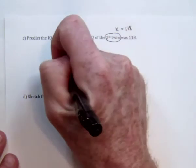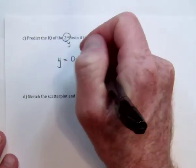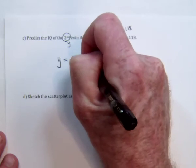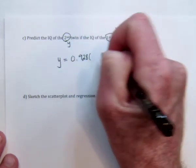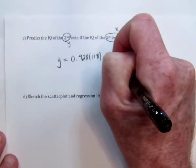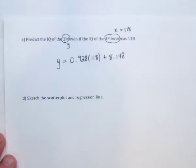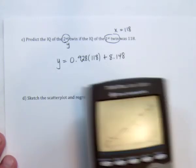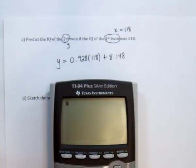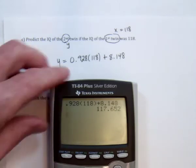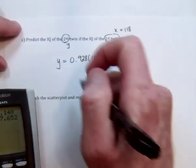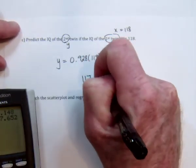So we just do the regression equation, 0.928 times 118, plus that 8.148 from the answer to part B. And then, find out how much that is. 0.928 times 118, plus 8.148. So if one has an IQ of 118, the other one will have an IQ of 117.652.